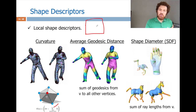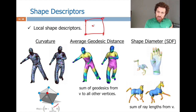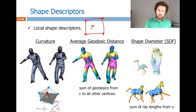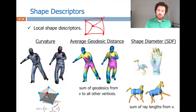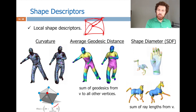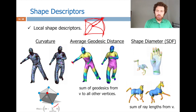Intuitively, for a central vertex with short distances to all other vertices the AGD value is small (pink color). For a tip point like a finger, the distances to far vertices are very long, so AGD is large. This makes AGD effective for separating extreme points such as fingertips, toes, and the head.